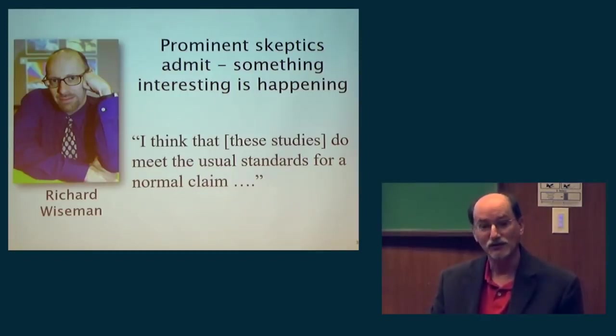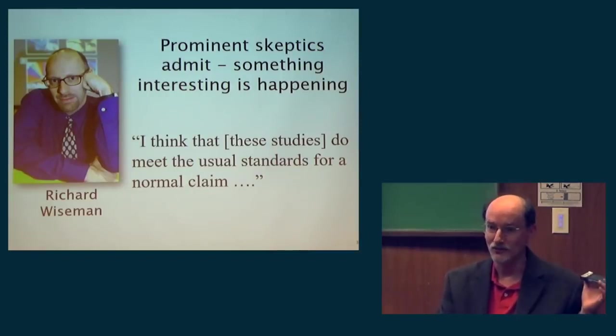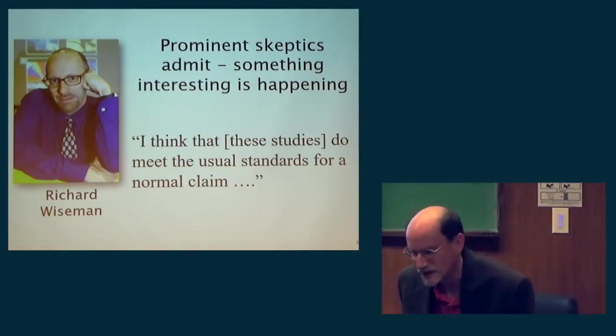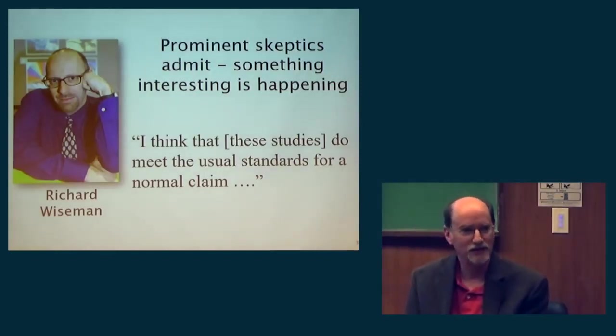The strength of the evidence is sufficient to convince even prominent lifelong skeptics, including this psychology professor in the UK, a prominent skeptic, who has said in an interview, I think that these studies do meet the usual standards for a normal claim. That means if telepathy was not controversial, the data would be overwhelming. People would simply accept it. But because telepathy is controversial, even Richard Wiseman doesn't accept the data. What it tells us is that this a priori probability that telepathy could exist is extremely low, down in the 10 to the minus 20 range. At some point, skepticism is necessary in science, but if your a priori probabilities are so low that you don't accept the possibility of something, it's not even science anymore.